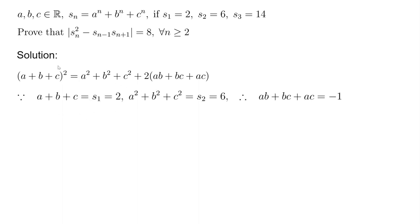You get 4 equals 6 plus 2 times this one. So this one is just 4 minus 6 is -2 divided by 2 is minus 1. So it's ab + bc + ac equals minus 1.